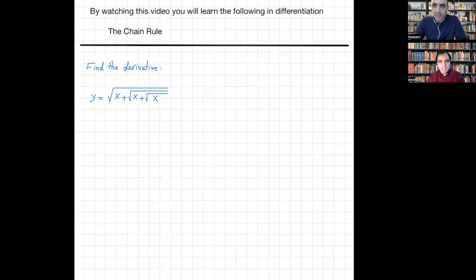Regarding the chain rule, I provided this problem to Hussein to solve. That's y equals square root of x plus square root of x plus square root of x. It may seem complicated, but it is not actually. Yeah, it looks scary. No worries. I actually asked you to solve this problem using the chain rule in calculus.